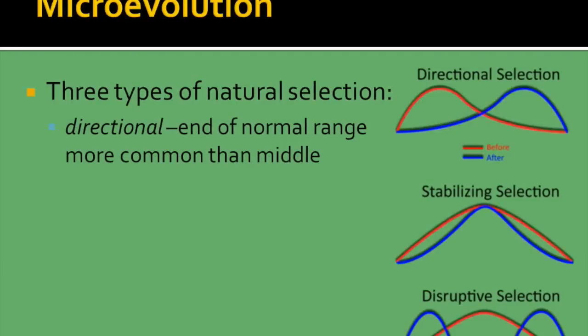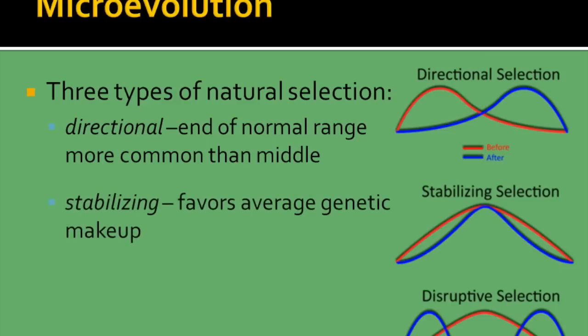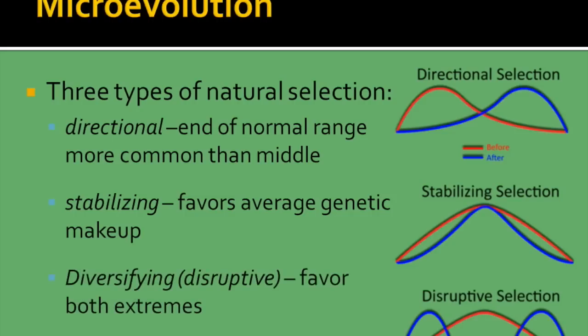There are three different types of natural selection. Directional selection focuses on going from one end of the normal range to the opposite end — it's survival of the fittest, where organisms need to adapt to survive by favoring traits that allow survival. Stabilizing selection favors the average: if you're at one of the extremes you won't make it, but if you're average you'll survive. Diversifying or disruptive selection is the opposite — it favors both extremes, and the average traits will die off while the evolution of the extremes will flourish.